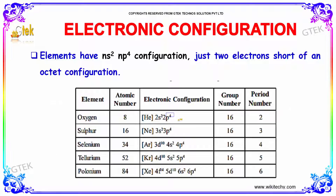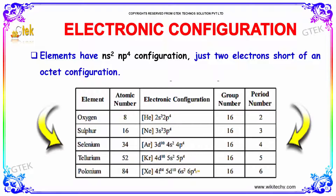If the electron count is 8, it would be an octet configuration. Currently, the valence electrons number 6.